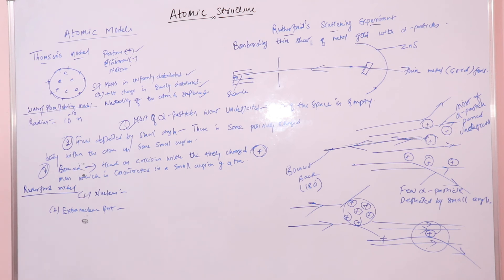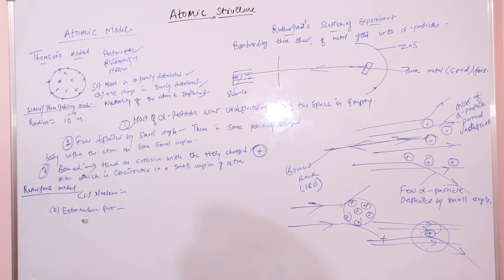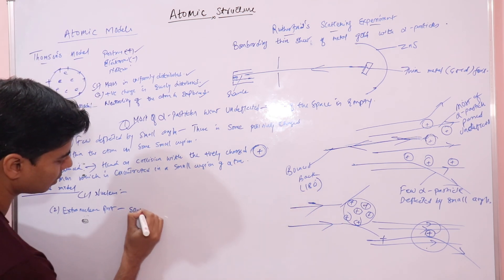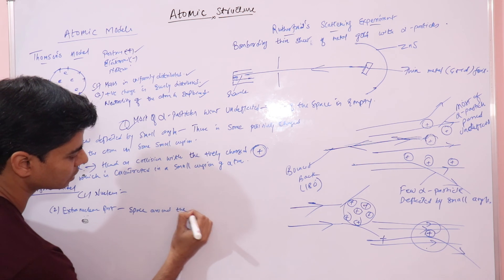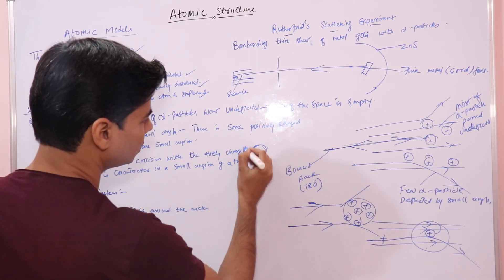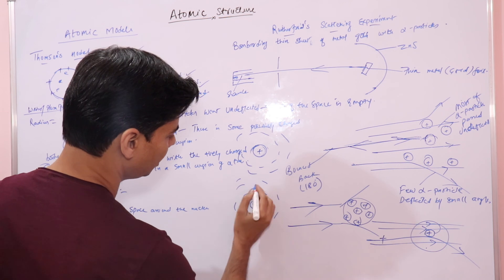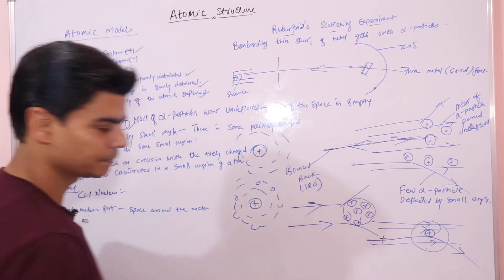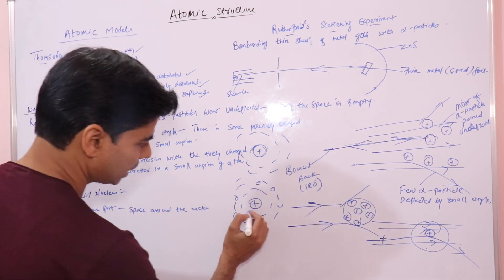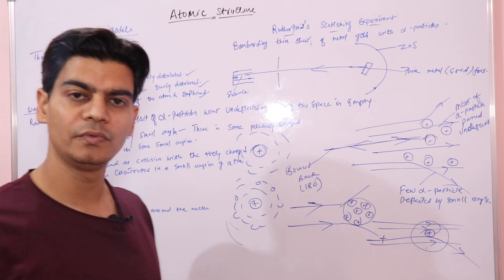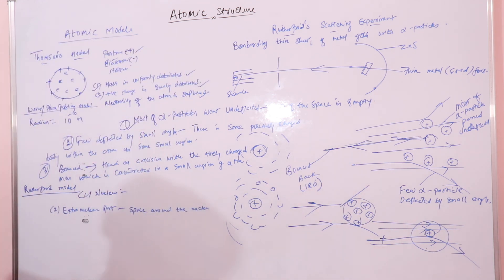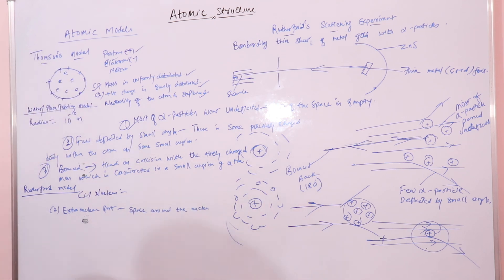The extra-nuclear part is the space that surrounds the nucleus and contains negatively charged electrons, which are revolving around the nucleus at very high speed. The extra-nuclear part is the space around the nucleus where electrons are moving at very high speed. So we have the nucleus at the center, and surrounding it is the extra-nuclear space where electrons are moving at very high speed.